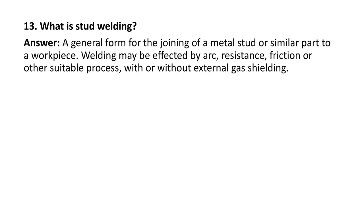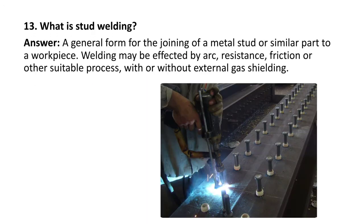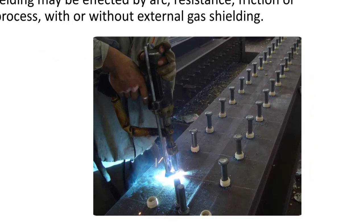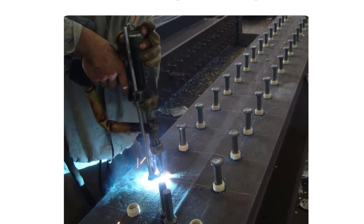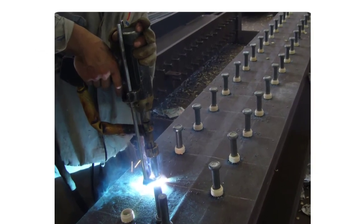Next question: what is stud welding? It is a general form of joining a metal stud or similar part to a workpiece. Welding may be effected by arc, resistance, friction, or other suitable processes, with or without external gas shielding. Here you can see the process of stud welding, where a stud is welded to a plate — generally used in sheet metal.